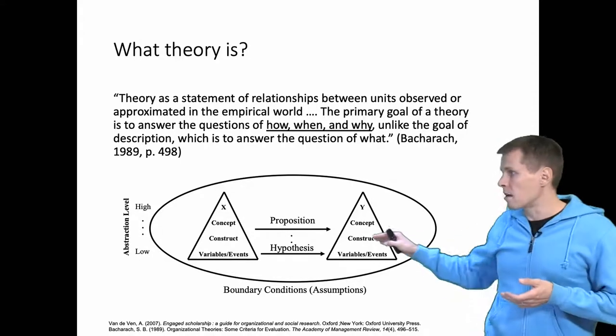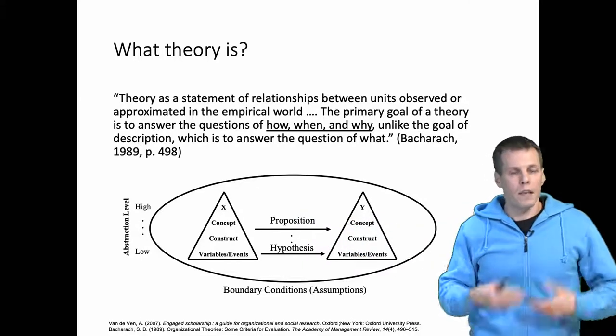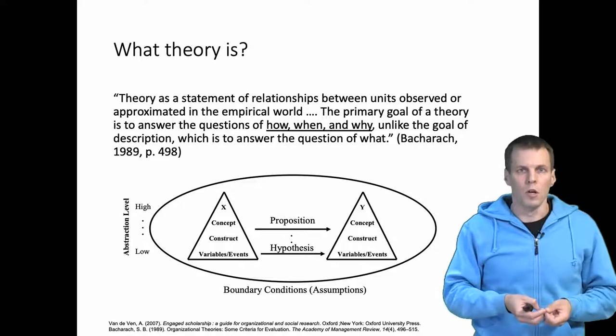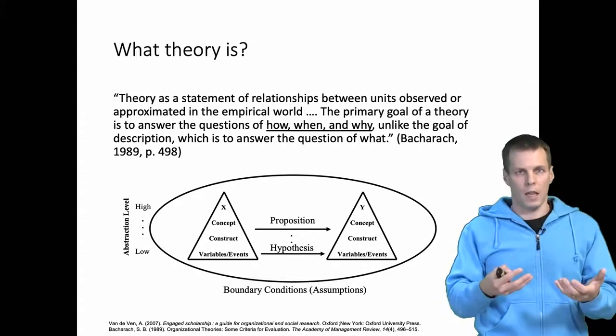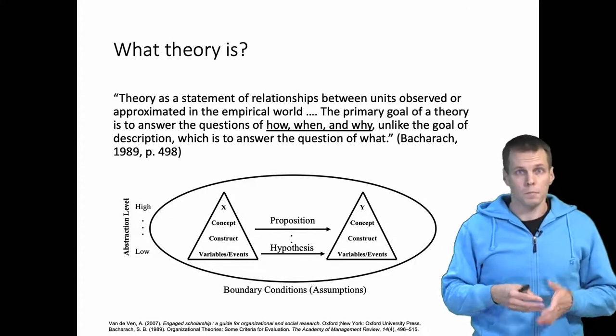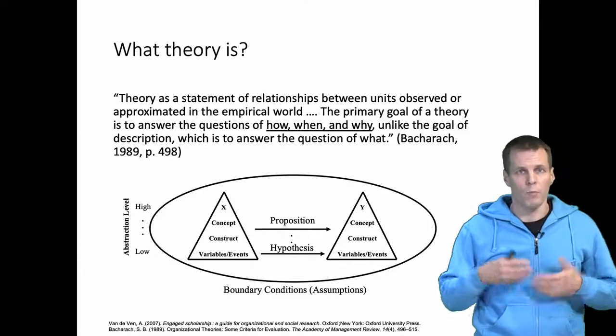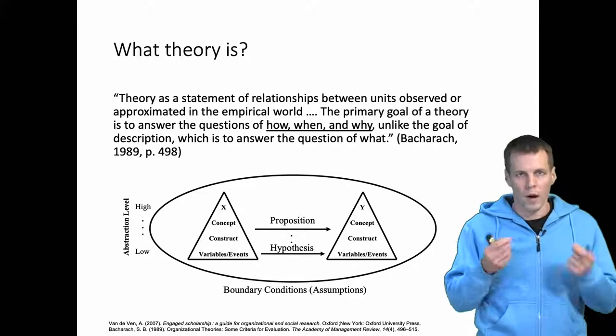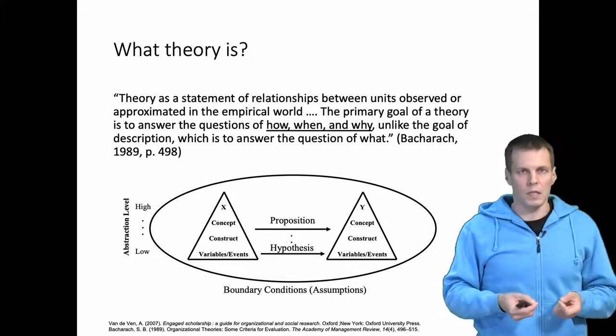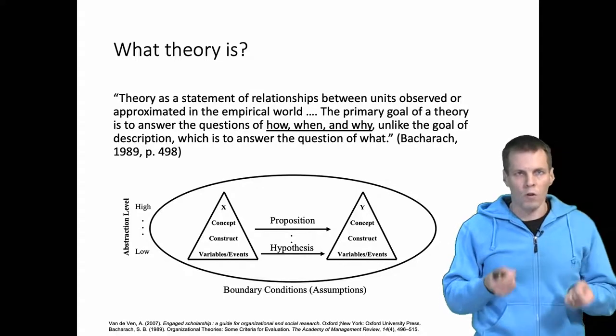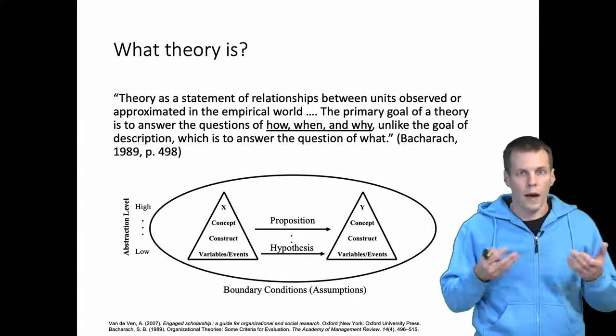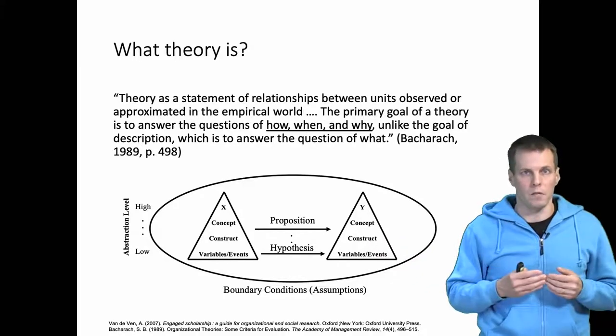For example, we could have a proposition, which is a basic causal claim within a theory, that innovativeness causes companies to be more successful. Then to have a theory to support that proposition, we would have to explain the different causal pathways or the different mechanisms through which innovativeness causes companies to be more successful. For example, we could say that innovativeness allows companies to come up with better products, better products allow them to capture more market share, and that allows them to grow and be more profitable. We could also say that innovativeness allows them to have improved processes, less scrap, more efficiency, therefore lower costs and more profitability. So that kind of how, when, and why explanation is required for a theory along with the proposition which states the key causal relationship that the theory is about.